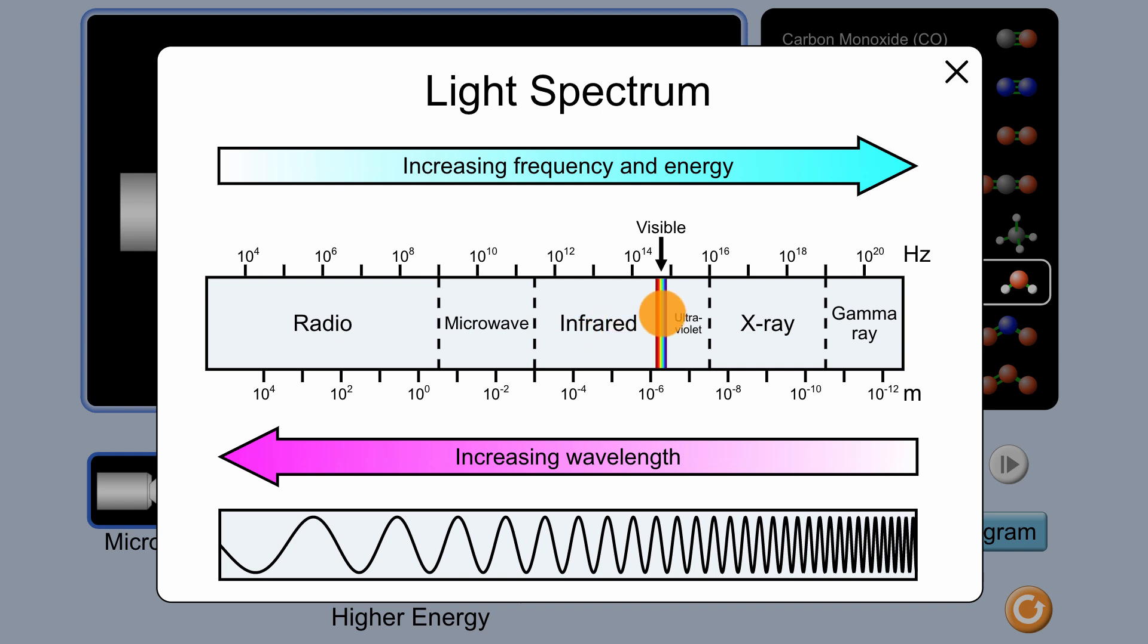And then you get even higher frequency and more energy. You get to ultraviolet, then X-ray, and then gamma rays. And this isn't a linear scale. You can see that this is a logarithmic scale here. This is in powers of 10. So we see some pretty dramatic increases in frequency and energy as we go from the left to the right.